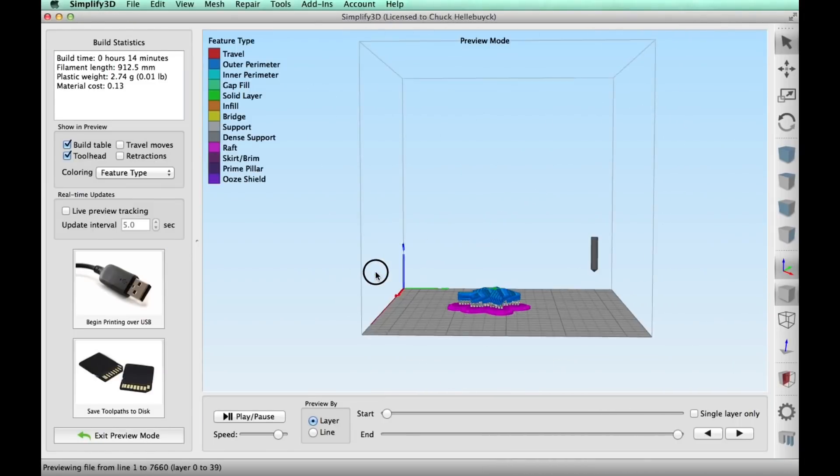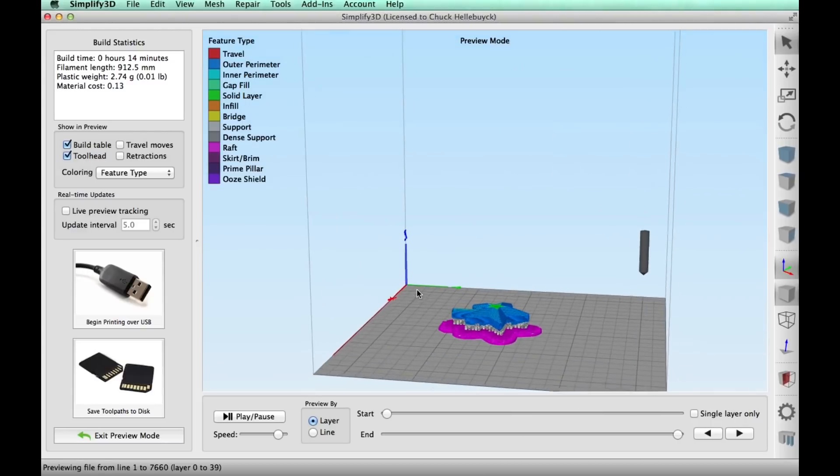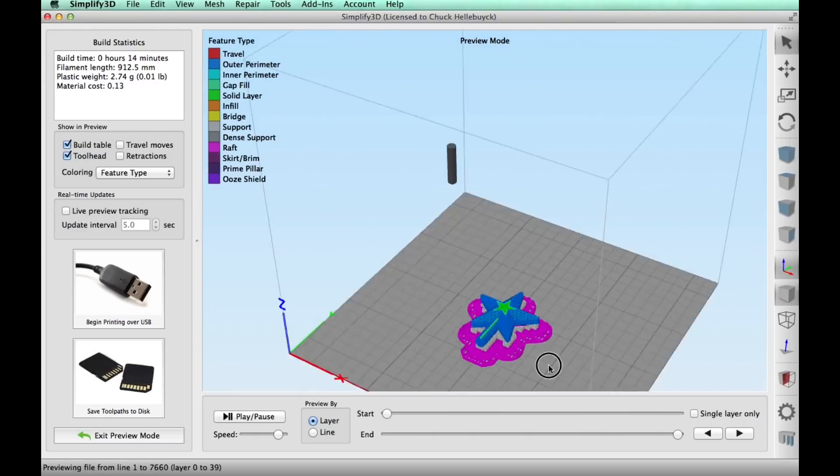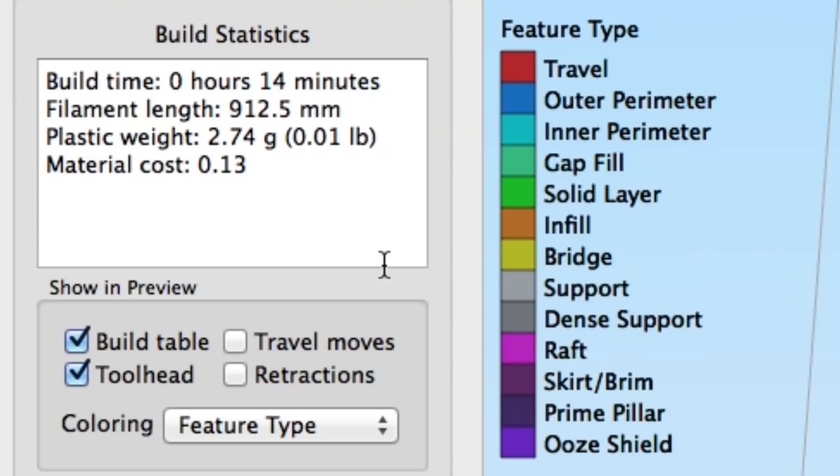Click prepare to print. You can see all the support is there, so this thing's ready to print on the mini. I'm going to print both these guys, and this one is going to print really quick because it's only 14 minutes and not even a meter of plastic.